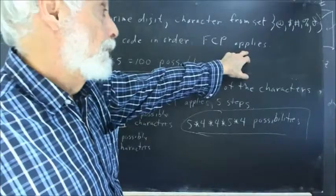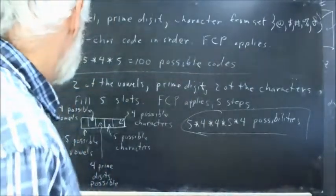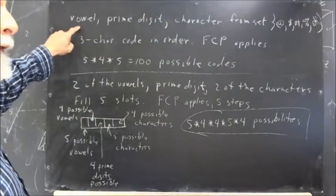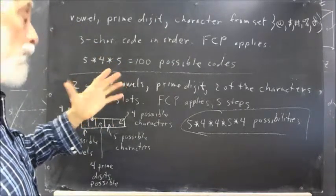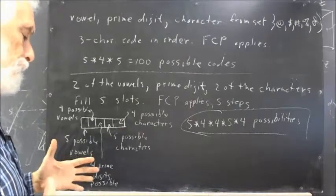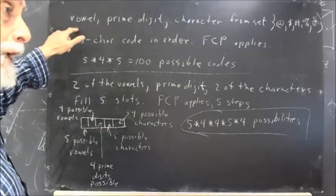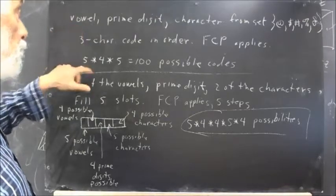The fundamental counting principle applies here. Because your first choice is going to be a vowel, it could be any vowel. There are five choices for the vowels. No matter what we choose for the first, there are five characters from which to choose it.